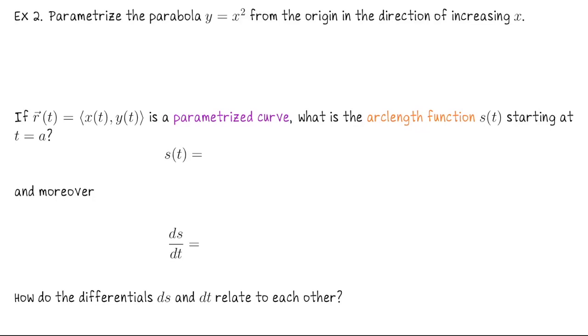For a second example, let's parametrize the parabola y equals x² from the origin in the direction of increasing x to the point (3,9). If we're parametrizing a curve that looks like part of the graph of an equation y equals f of x, remember we have a default way of doing this. Let x be t, then we've already solved for y in terms of x, so we get y is t². So our parametrization here would be r(t) equals (t, t²), and then the bounds for t go from 0 to 3.